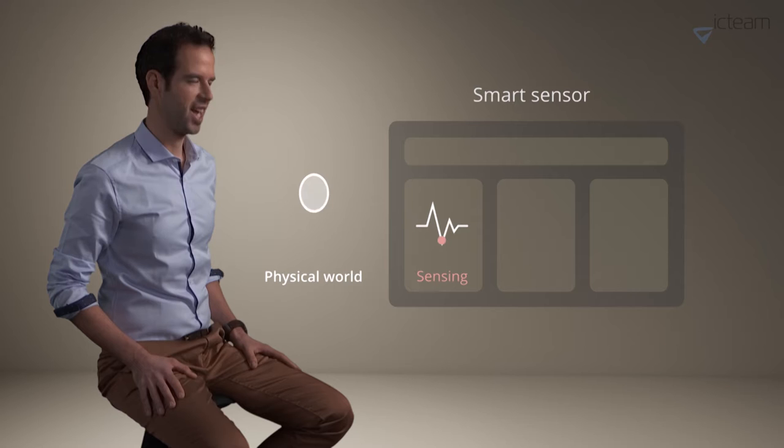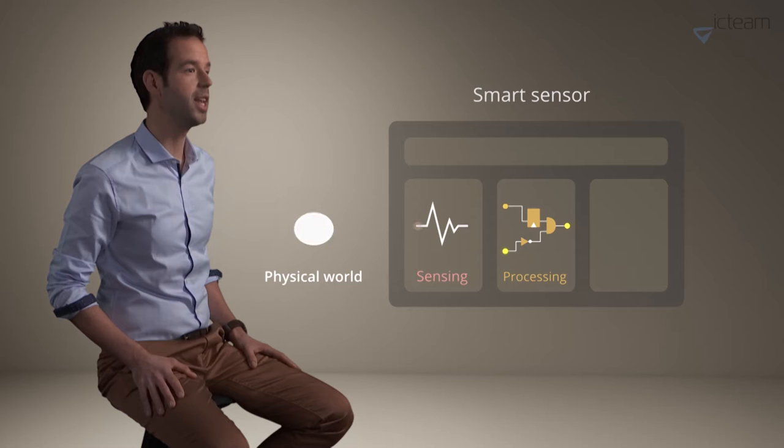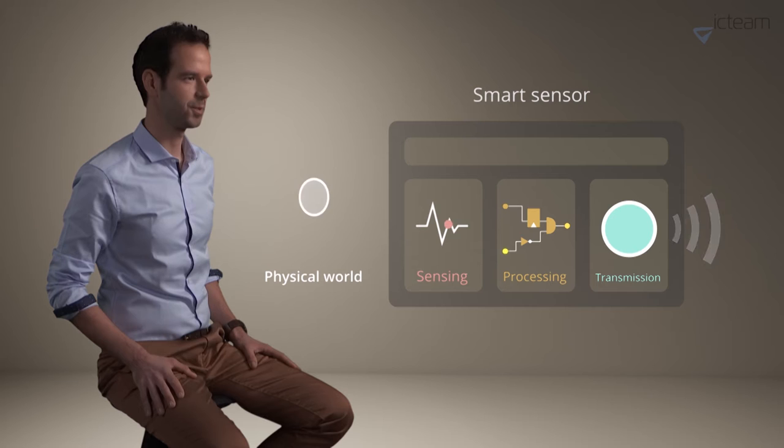Second, a microcontroller processes the sensor signal to extract and encrypt the meaningful data. Third, a radio wirelessly transmits the data to the cloud. Finally, small batteries supply the system through onboard power management.